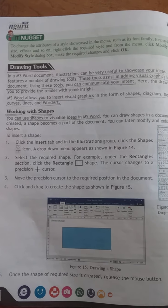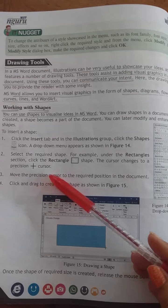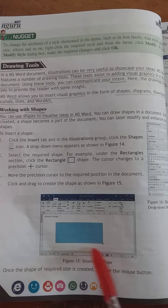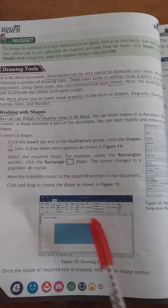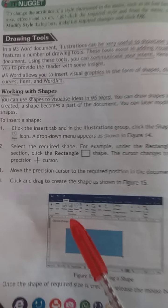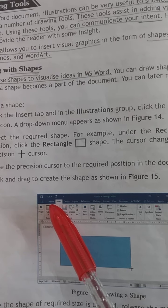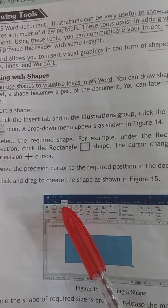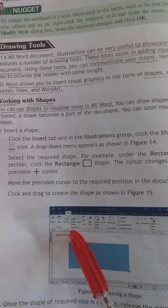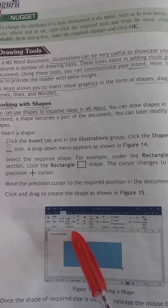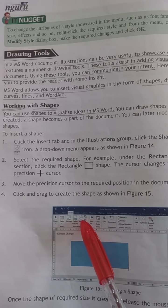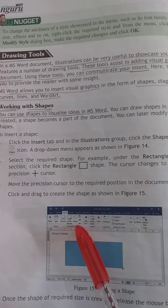How to insert a shape. See this example — this is your working area, the blank space where you work. Firstly, on the right side of Home, click on the Insert tab. When you click on the Insert tab, then click the Shape icon over here.